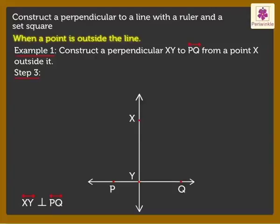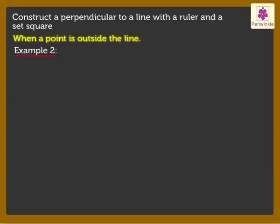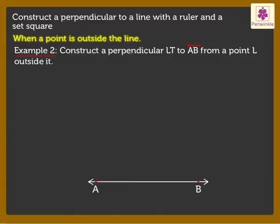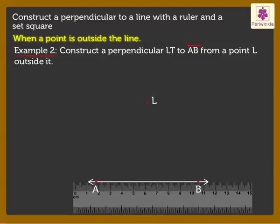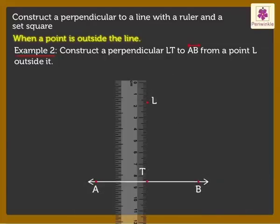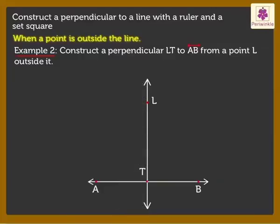Now let us solve another example of the same type. Construct a perpendicular LT to Line AB from a Point L outside it. Thus, we say Line LT perpendicular to Line AB is obtained.